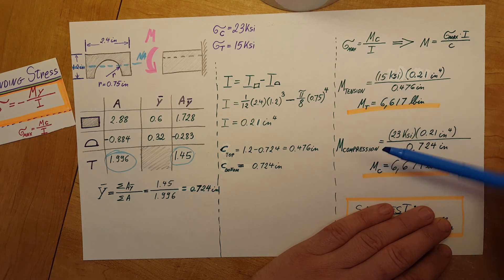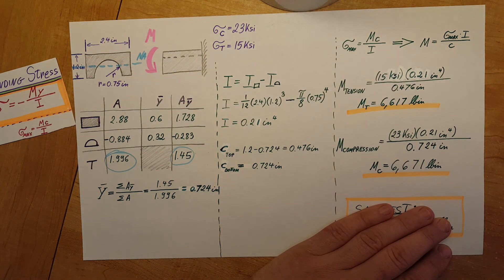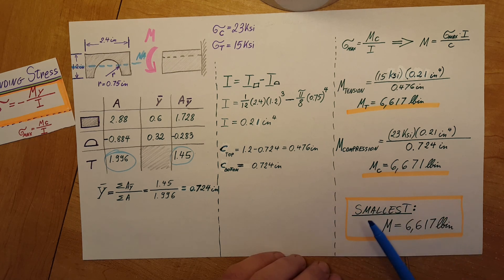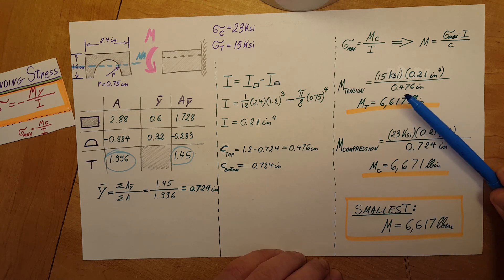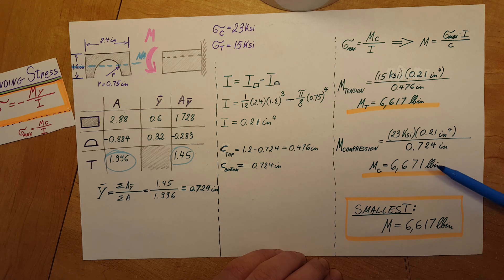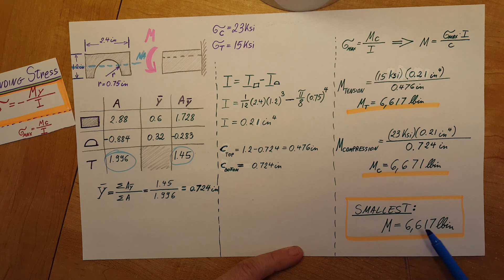As we see, we found two moments that we can use for this material, but the material can only handle one. One is too big for it. To make sure it will not fail, we will pick the smallest of the two. If we pick the bigger one, then the small will fail. Therefore, smallest moment equals 6,617 pound inches.